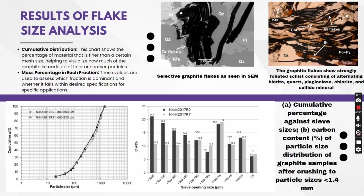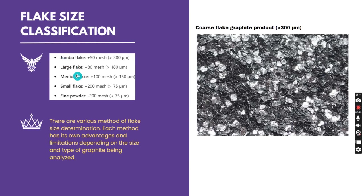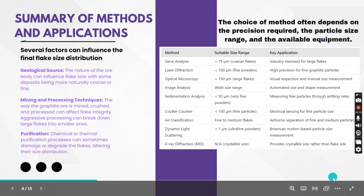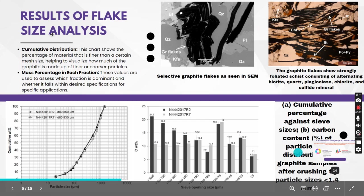The types of flakes — jumbo, large, medium, small, and fine — are covered. Fine starts from less than 75 microns, and small onwards all flake sizes can be analyzed by sieve analysis. For very fine particles, laser diffraction is used. Optical microscopy is a different technique, mostly qualitative with limited quantification. Image analysis covers a wide size range; sedimentation analysis and Coulter counter are also available, each to be discussed in upcoming slides.